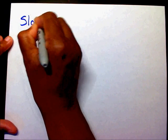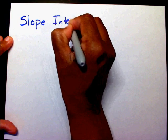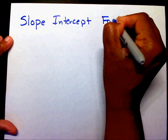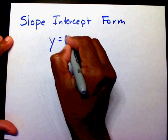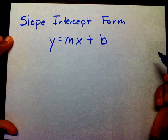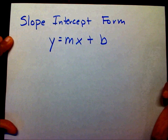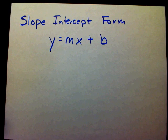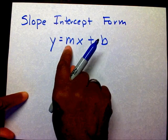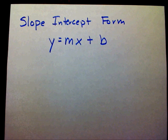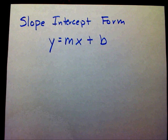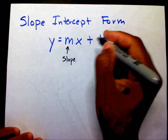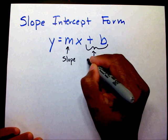Slope intercept form is y equals mx. And if you watched the last video, that m is where the slope is going to be. This is your slope.